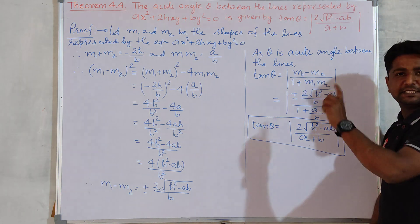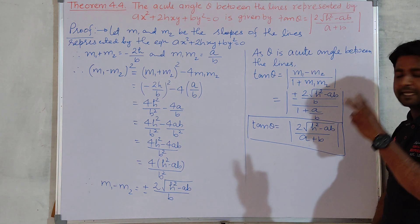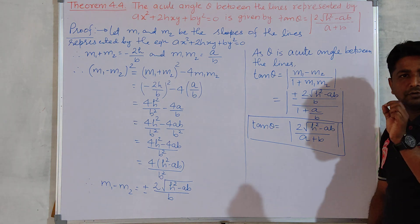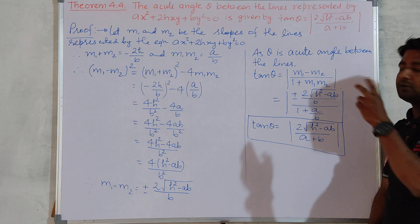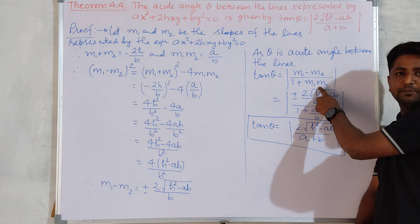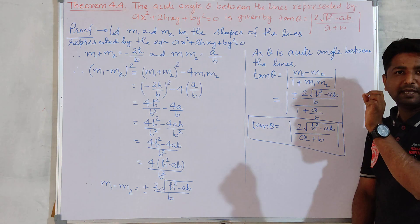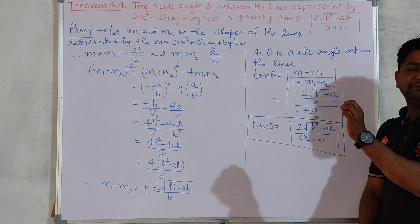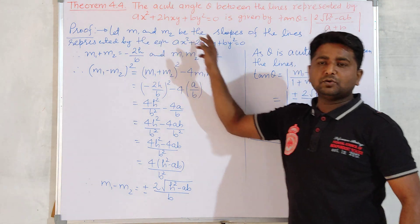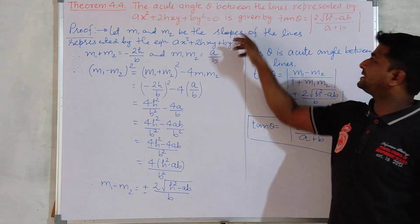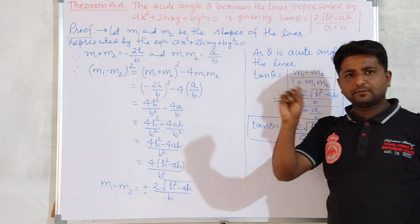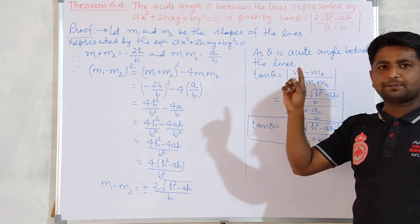m1−m2 means the difference of the slopes, and m1×m2 means the product of the slopes. So the two things required to derive this formula are the difference of the slopes and the product of the slopes. We will find m1−m2 and m1×m2, where m1 and m2 are the slopes of the lines represented by the given equation passing through the origin.